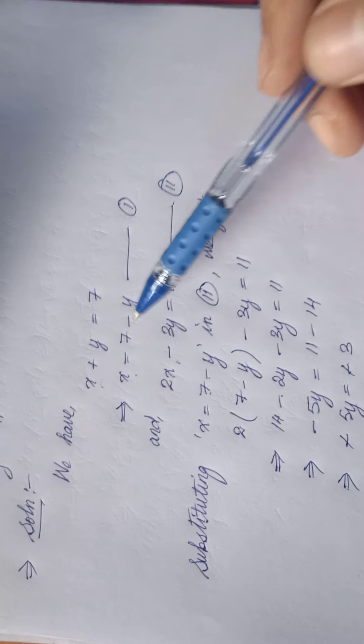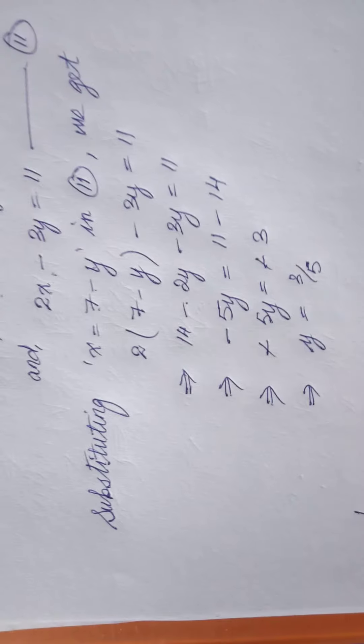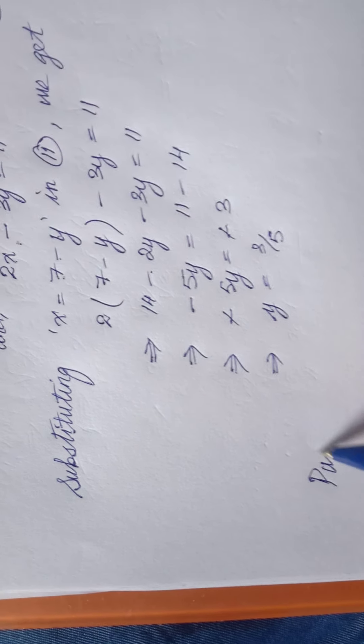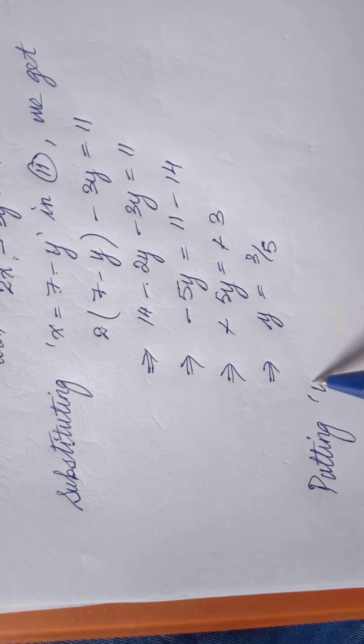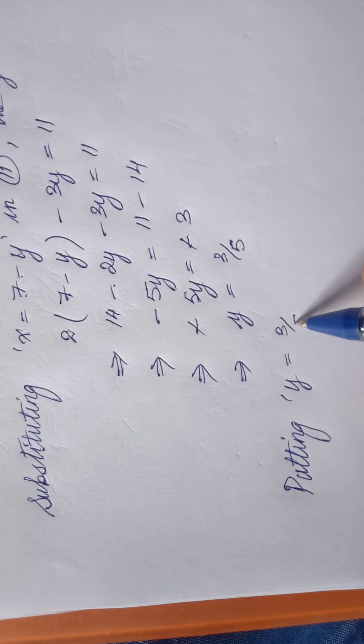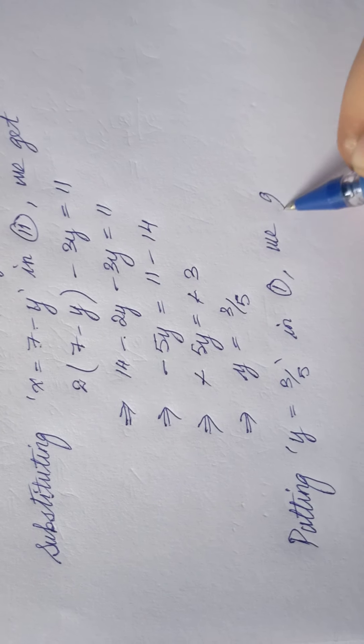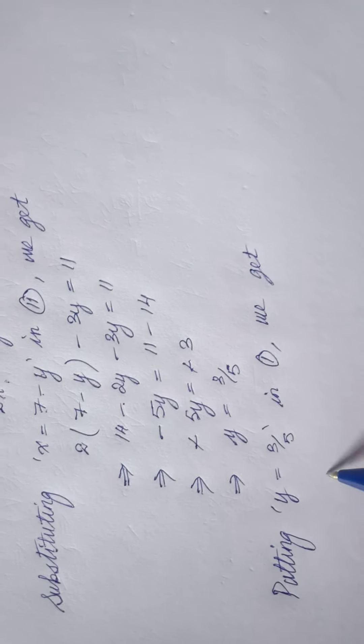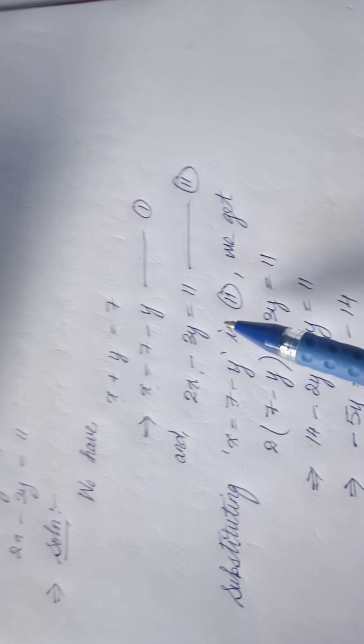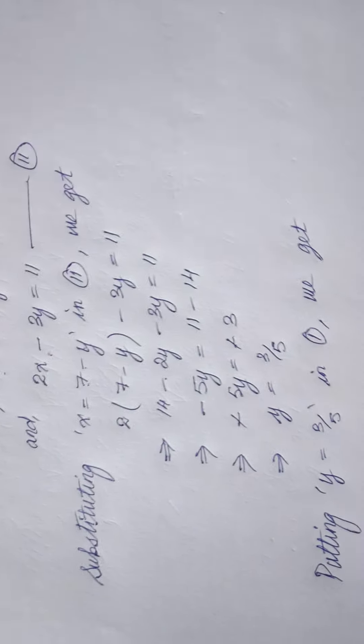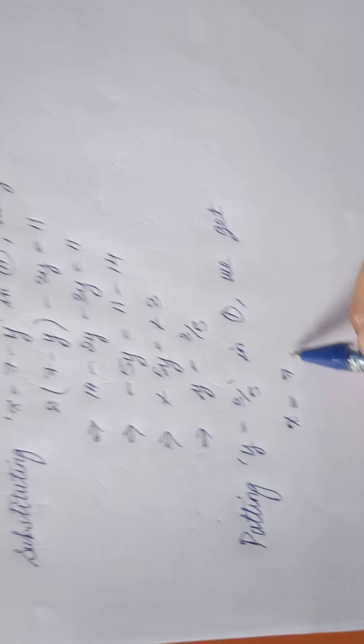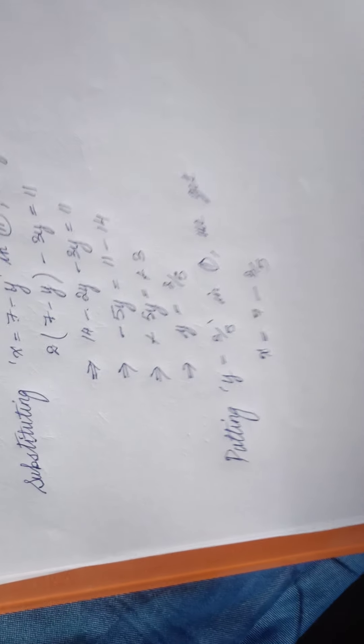I have to put the value of y in equation 1 then I can find the value of x. Very simple. Putting y equals 3 by 5 in equation 1 we get x equals 7 minus y. So instead of y I can put 3 by 5, 7 minus 3 by 5.